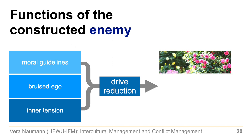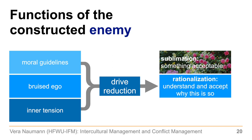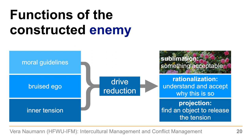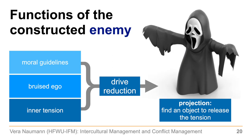We need drive reduction — this inner tension, this drive must be reduced. There are certain alternatives. First, sublimation: do something acceptable — put the energy into something entirely different, like writing a book, composing a song, or growing roses. Second, rationalization: understand and accept why this is so — for instance, the way you accept speed limits. Third, and important for our model, projection: you find another object to release the tension — projection into a ghost or into an enemy, an object where you can release the tension.